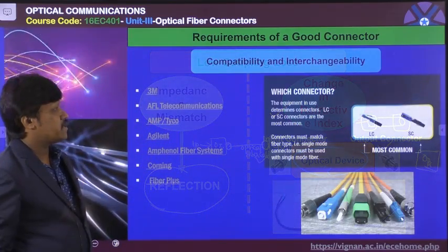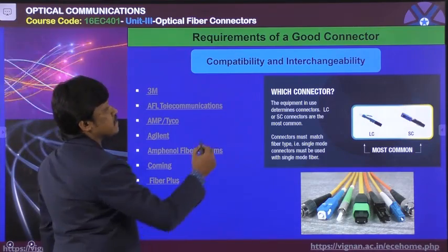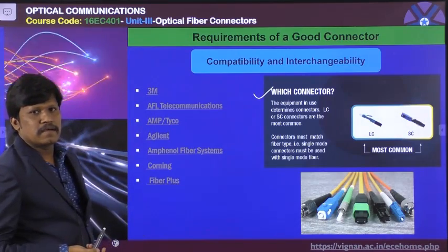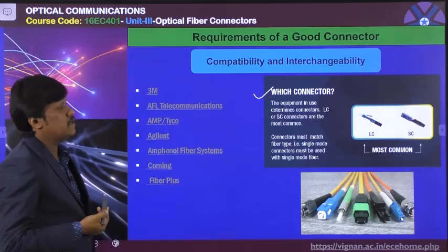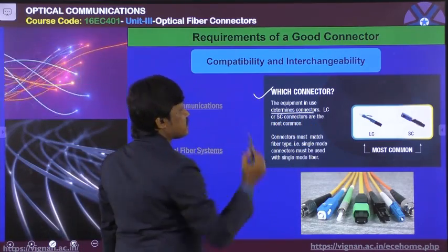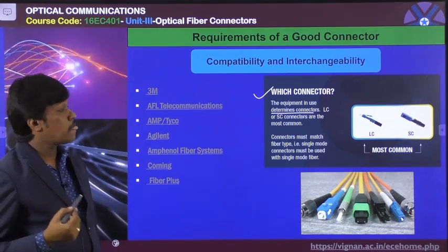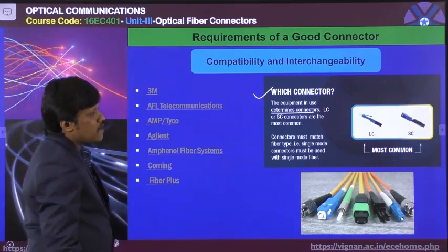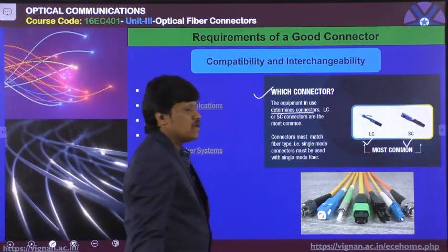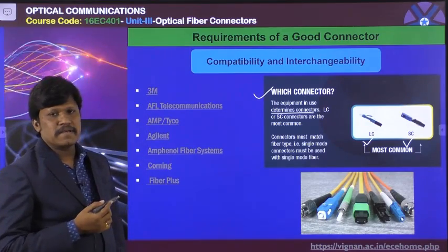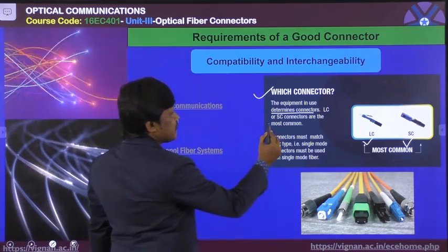Compatibility and interchangeability: whenever we are purchasing connectors, we need to determine which connector is best suitable for which equipment — here the equipment is our optical transceiver system. The equipment in use determines the connectors. There are generally two most common types: LC (Lucent Connector) and SC (Subscriber Connector). LC connectors manufactured by 3M and LC connectors manufactured by AFL Telecommunication are examples of different manufacturers.